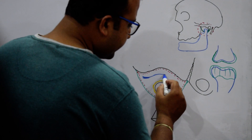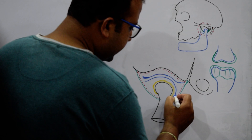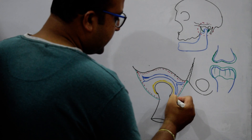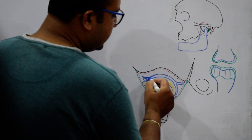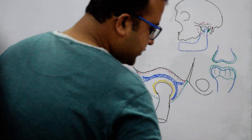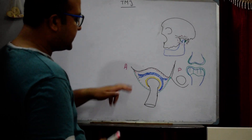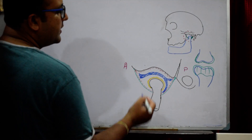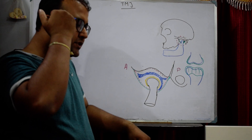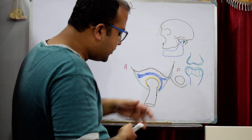From the side view, the fibrous disc is visible. Anteriorly the disc connects in one direction, but posteriorly it bifurcates — it splits into two branches. In this posterior region where the bifurcation occurs, there is a large venous plexus present.